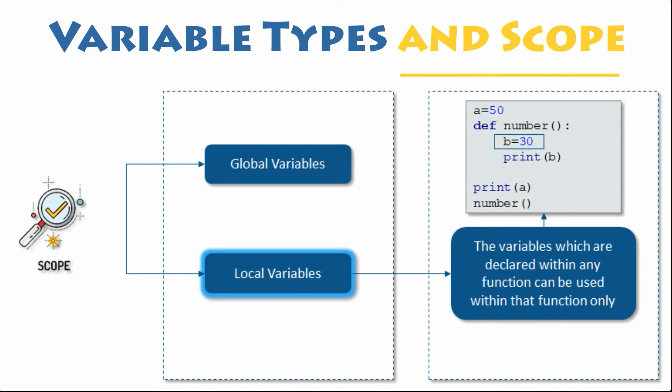When you use the assignment operator equals inside a function, its default behavior is to create a new local variable, unless a variable with the same name is already defined in the local scope.